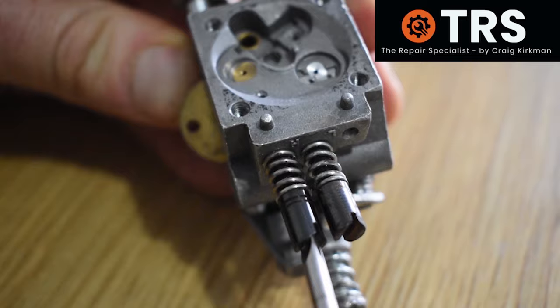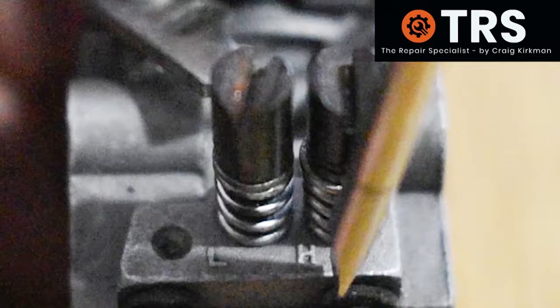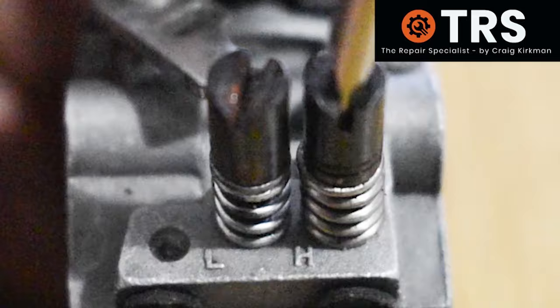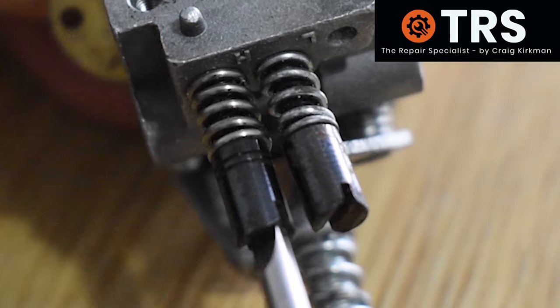So with this screw we can make the carburetor run rich or lean. Because at the moment we're talking about the H screw - meaning high, so meaning high revs - then any adjustment on this screw will make the high revs of the engine rich or lean.